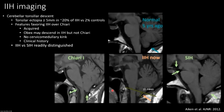Cerebellar tonsillar descent is hard — we've just talked about SIH where tonsils get low in low pressure, so what are they doing low in high pressure? It happens and I don't fully understand it. In SIH, brain sagging is really a midbrain phenomenon; tonsillar descent is just the afterthought among all the other findings. Here's one of my patients, mid-thirties: five years ago her tonsils looked normal, but when I met her she had IIH headaches, a flattened pituitary gland, and tonsils now about 10 millimeters below the foramen magnum.